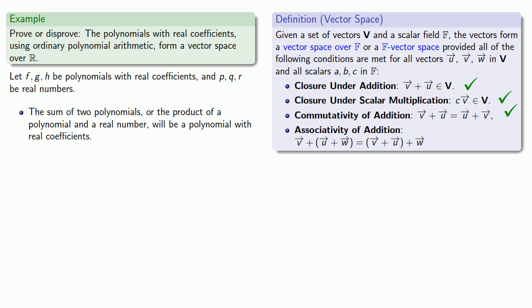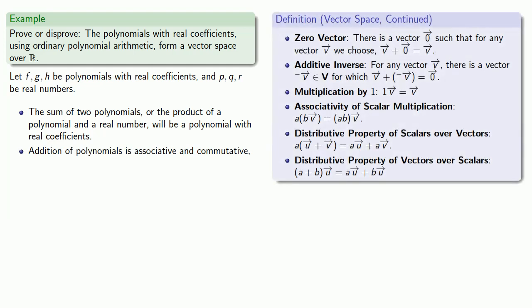Likewise, if I take three polynomials, it doesn't matter if I add the second and third together and then add that to the first, or if I add the first and second together and then add the third. So addition of polynomials is both associative and commutative. Next, the zero vector: there is a zero polynomial, namely zero, where adding zero to any polynomial gives the same polynomial. There is also an additive inverse, −f, where each coefficient of f is multiplied by −1. It is important to verify that these elements are also members of our set.